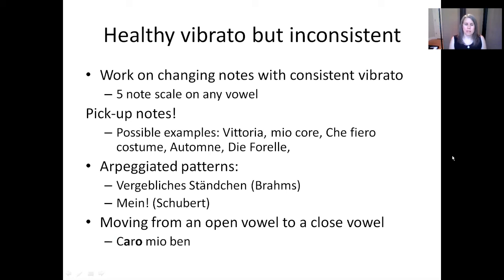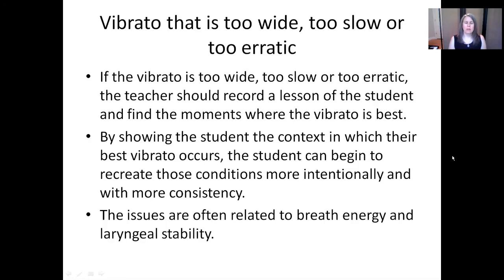One final place to look is when moving from an open to a closed vowel. For vibrato that is too wide, too slow, or too erratic, I recommend making a recording of the student to be analyzed at a later point by the teacher. Look for moments where the vibrato is optimal — either the most regular or the rate or extent that you most desire. Think about the vowel the student is on and the general context of where this best practice occurs, and then build exercises around perhaps this part of the range or a particular vowel. You may use Voce Vista to help either you or the student identify when the target is being met.